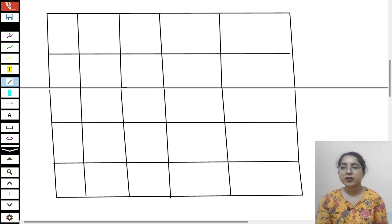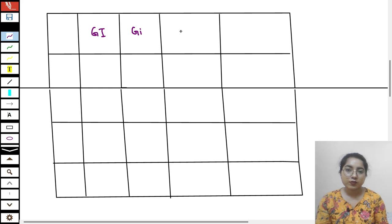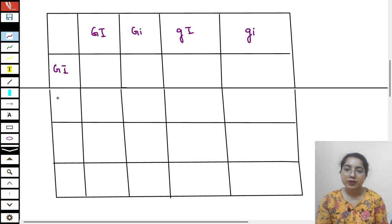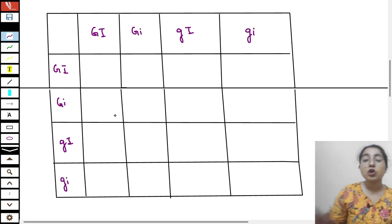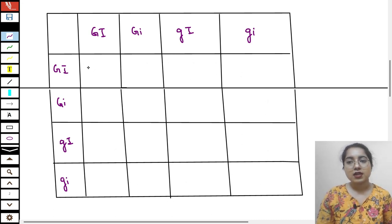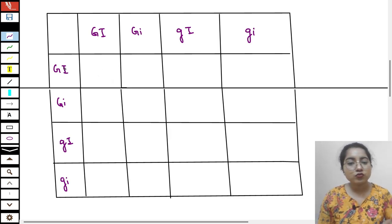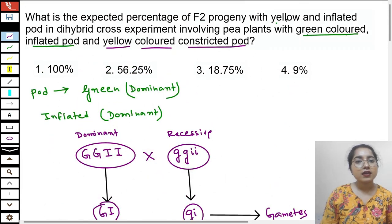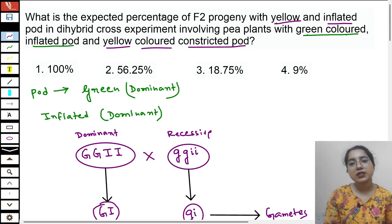Let's write the gametes first: capital G capital I, capital G small i, small g capital I, and small g small i — same thing here also. Now what do we want? What are we searching for? If you want to waste time you can build out all 16 boxes, writing capital G capital G capital I capital I and so on — but there is no need. We should find what is asked first: yellow and inflated, meaning we need to find the expected percentage.